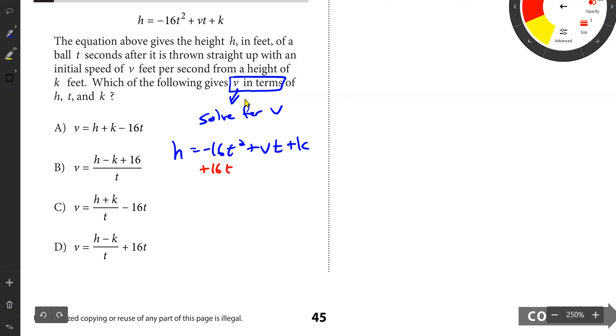You've got this equation. The first thing I'm going to do is add the 16T squared over and subtract K over. So I'm going to have H plus 16T squared minus K equals VT. We're just solving for V, just manipulating algebraically. Now because it's V times T, I want to divide by T. So these are going to cancel and you have your answer now.